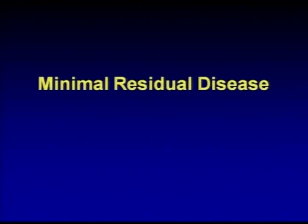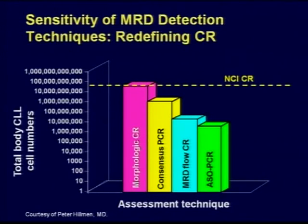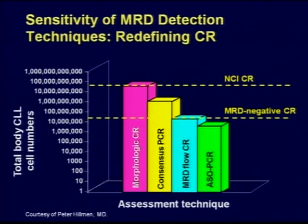That brings us to minimal residual disease status in ALL, which is a very important goal and has been incorporated in the assessment. Dr. Ritchie did talk about it. From a conceptual perspective, when someone is in a CR, you still have a lot of cells — it's a numbers game. The NCI CR is 1 followed by many zeros, and to get to the point where you start seeing cure, you have to go at least a few log reductions so you can achieve MRD negativity. Achieving this is the goal, and this is what an allotransplant does in addition to its immune effects.